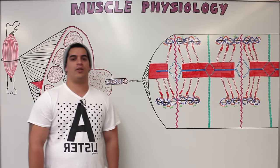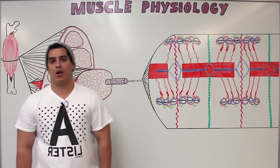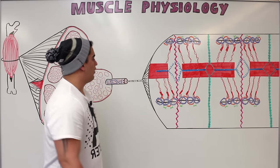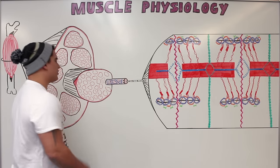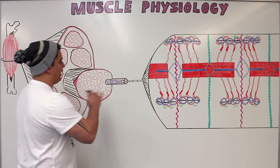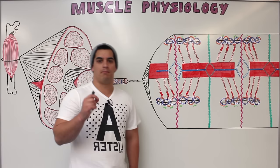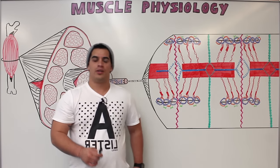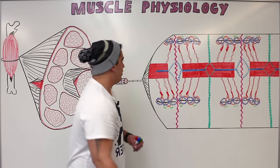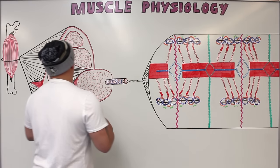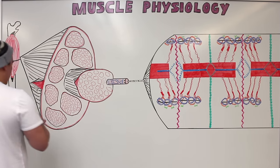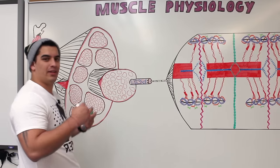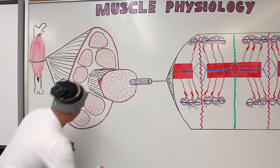In this video we're going to talk about the structure of skeletal muscle. Before getting into the diagram, let's discuss some characteristics of muscles. There are four characteristics that make muscle tissue different from other tissues.